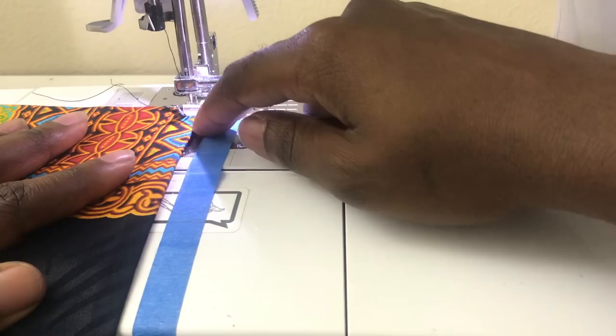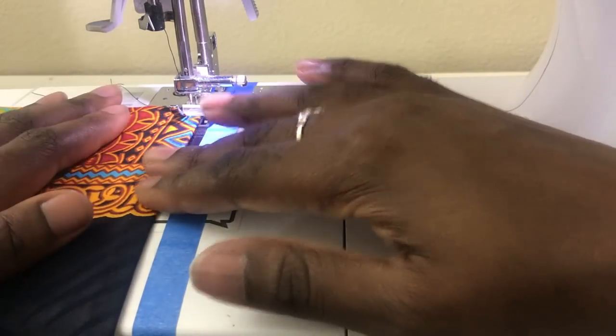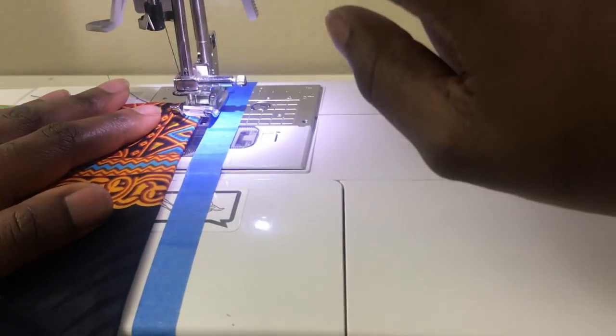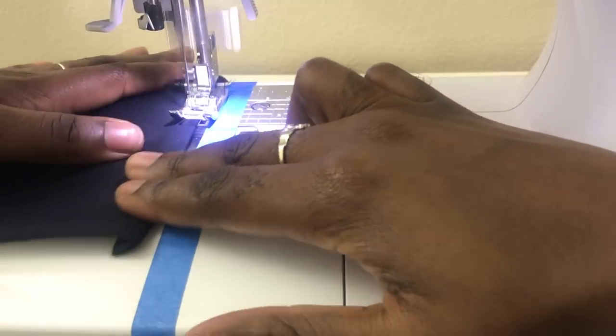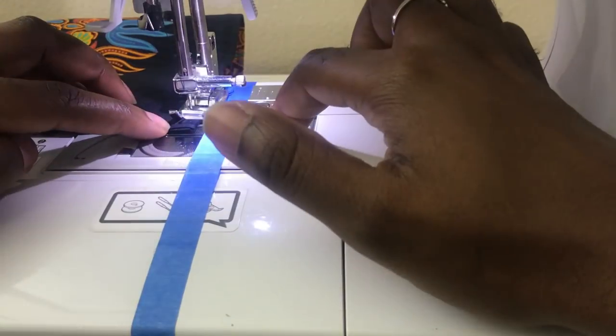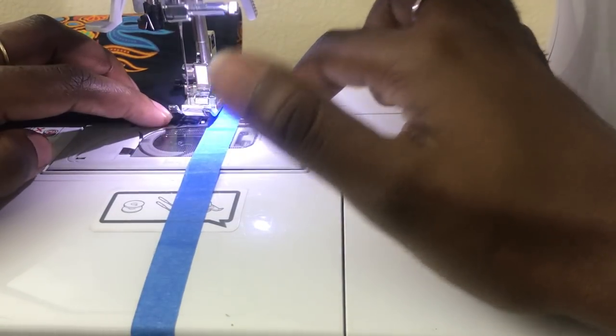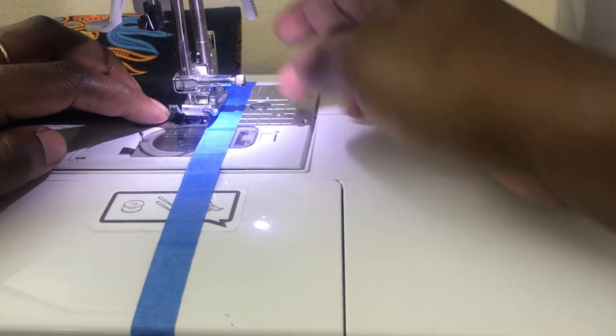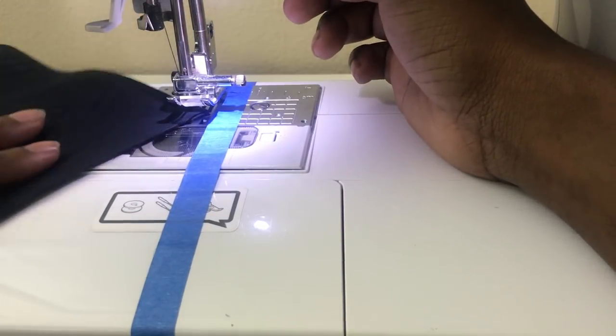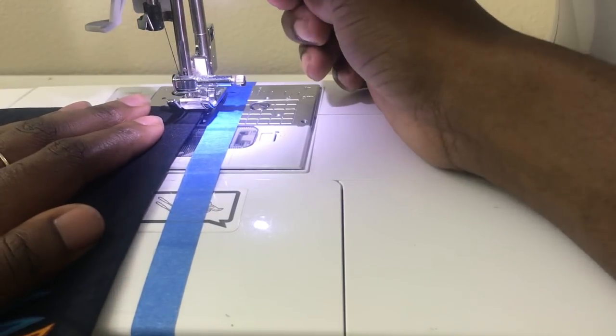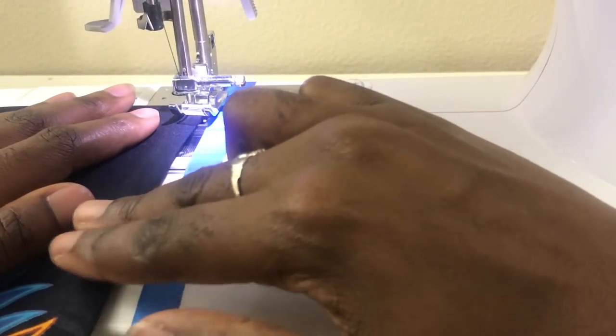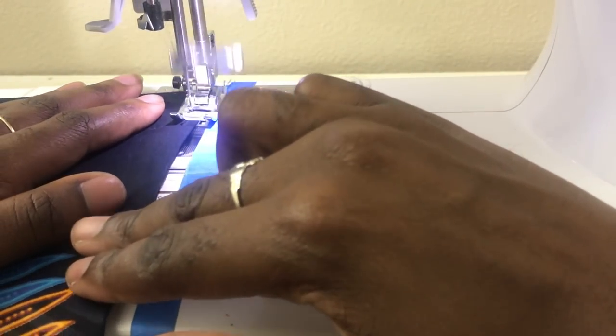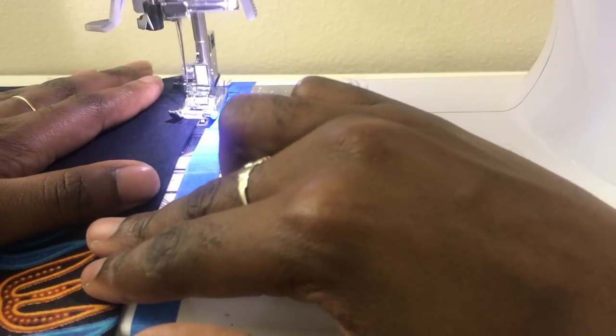I'm using a 1/4 of an inch seam allowance. When you get about 1/4 of an inch away, pause, lift up your presser foot, keep your needle in your fabric, and then continue sewing. You're going to repeat this process on all of the sides.